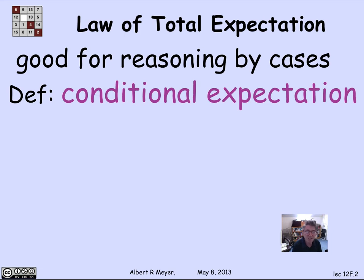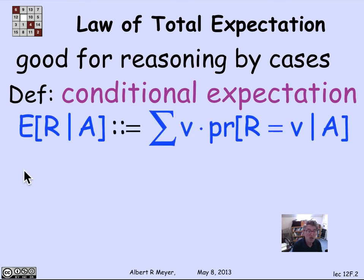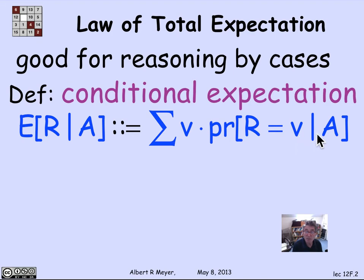It requires a definition of what's called conditional expectation. The expectation of a random variable r given event a is simply what you get by replacing the probability that r equals v by the probability that r equals v given a. It's the sum over all possible values that r might take of the probability that r takes that value given a.